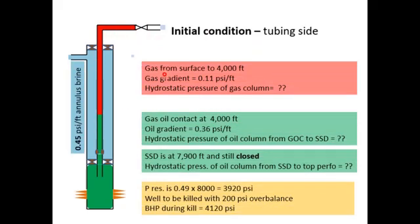In this example, we have gas inside the tubing from surface to 4,000 feet depth with a gas gradient of 0.11 psi/ft. Oil from 4,000 feet down to perforation with an oil gradient of 0.36 psi/ft. The SSD is at 7,900 feet and is still closed. The reservoir has a pressure gradient of 0.49 psi/ft at 8,000 feet from surface.